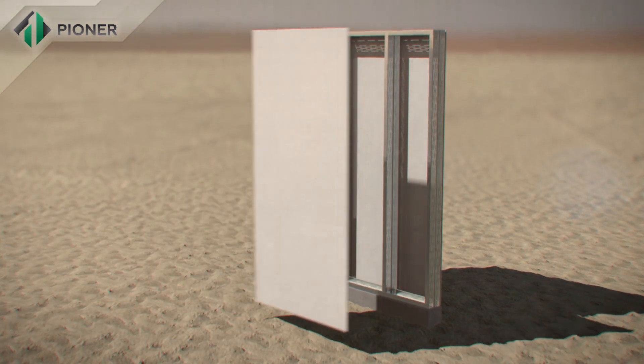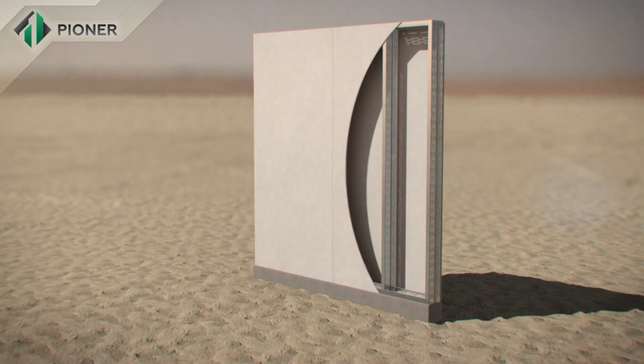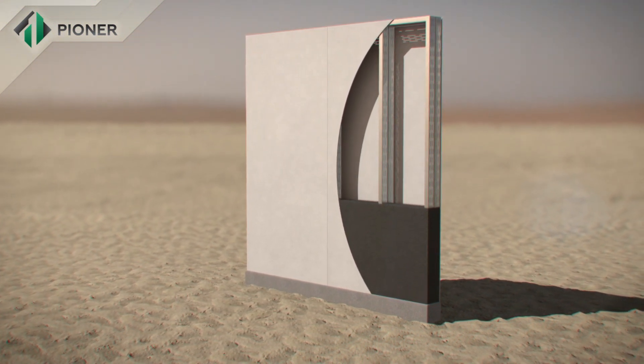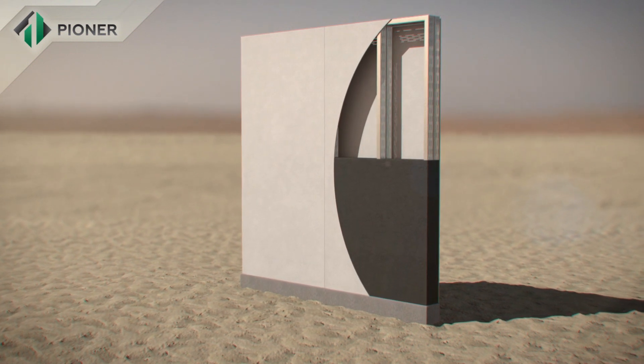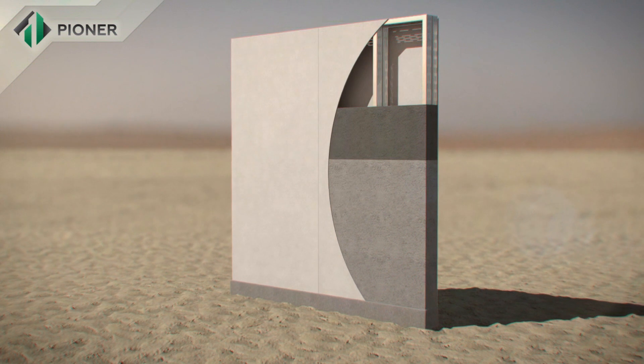A metal frame composed of bent galvanized profile which is mounted on a prepared foundation is the basis of Pioneer construction technology. Heavy combined fiber cement panels serve as permanent cast framework inside and outside of the wall.